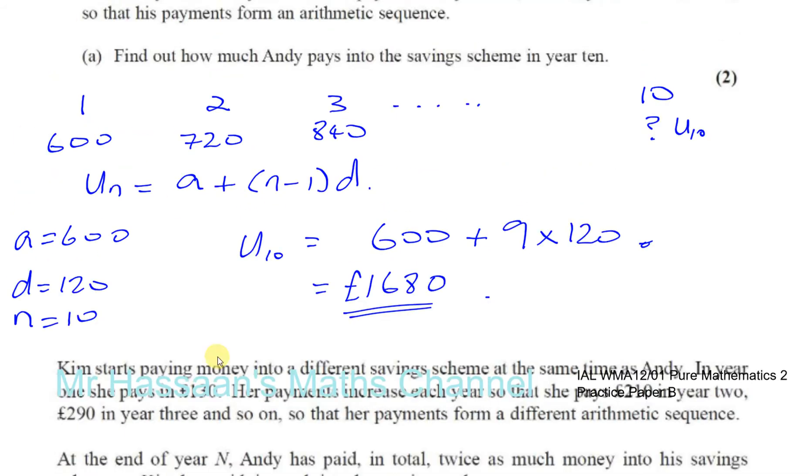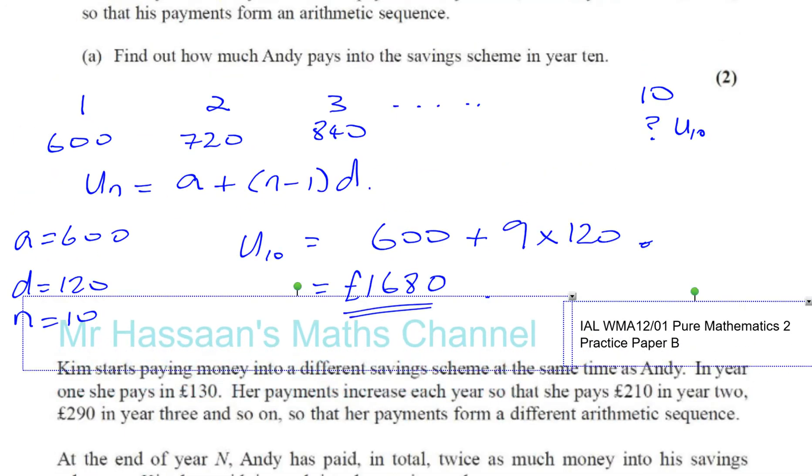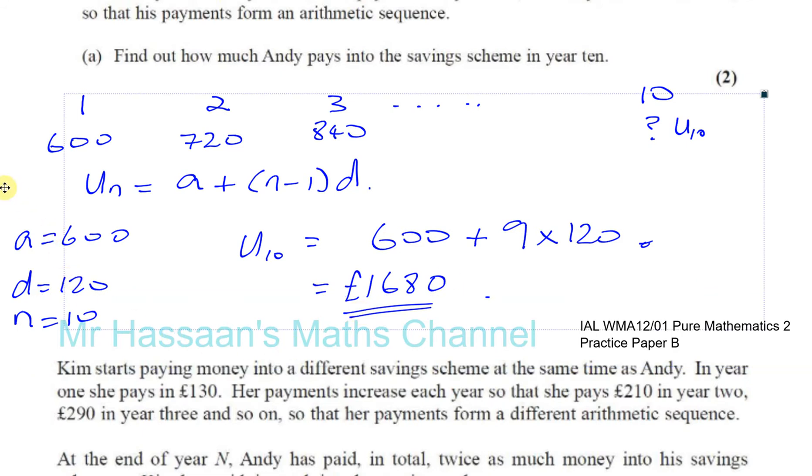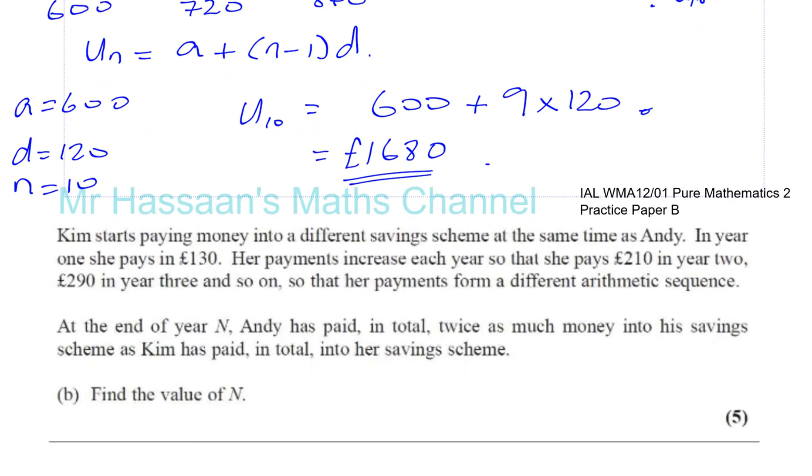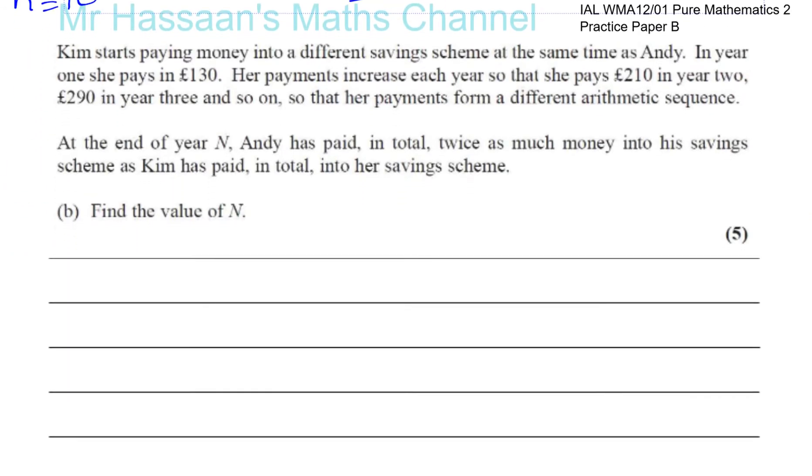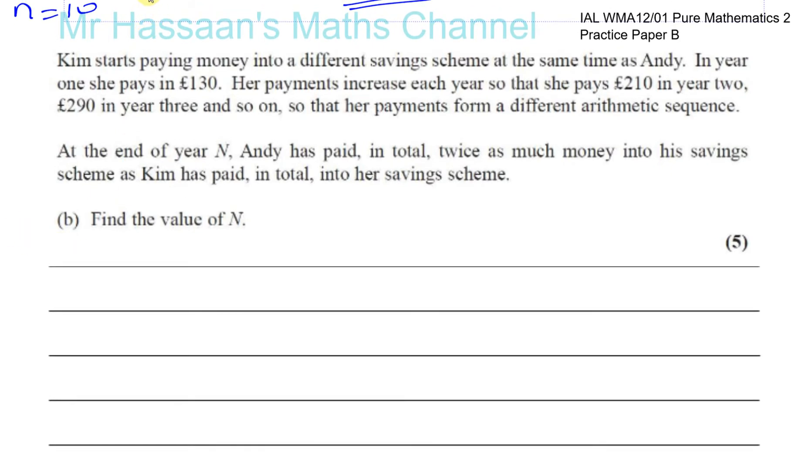Now part (b): Kim starts paying money into a different savings scheme at the same time as Andy. In year one she pays £130. Her payments increase each year: £210 in year two, £290 in year three, and so on.